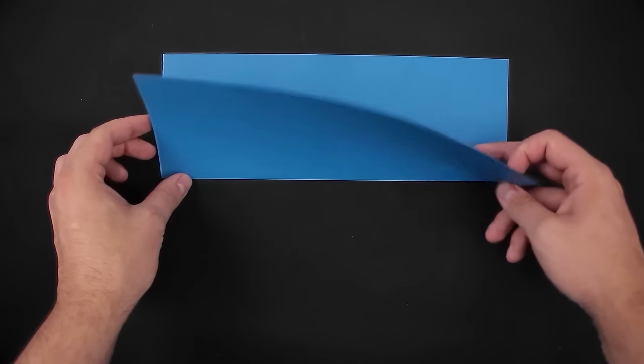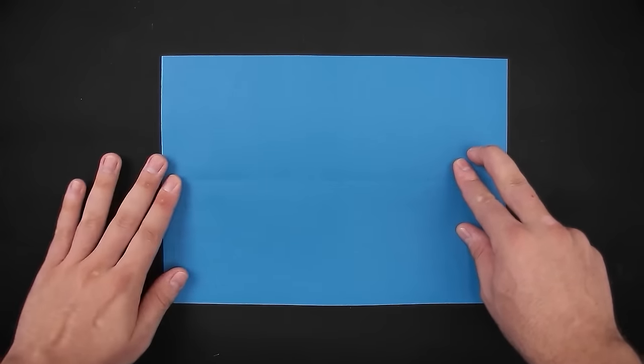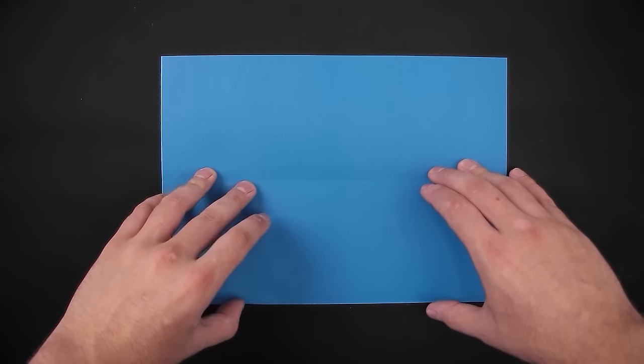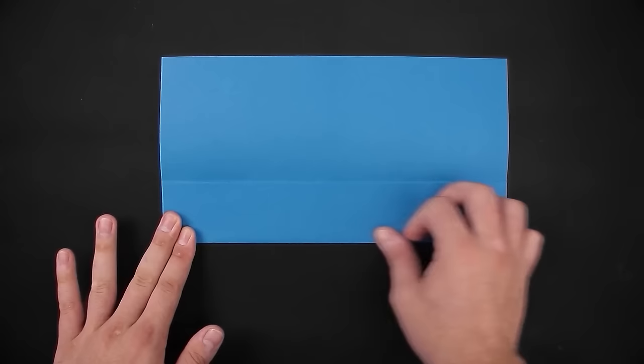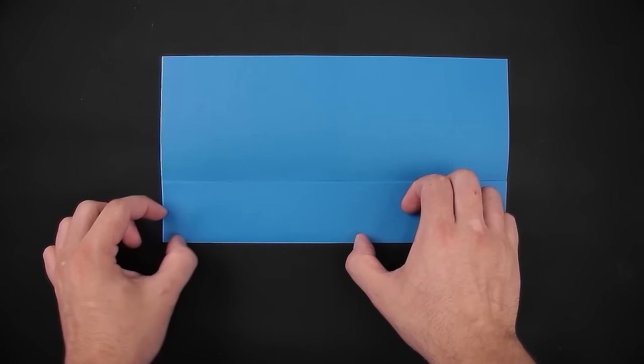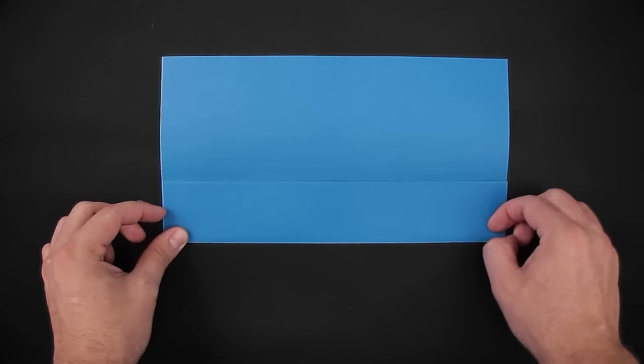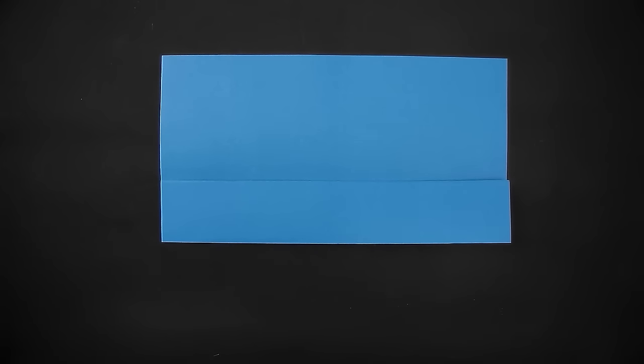After that we unfold, and now divide by four, bringing the edges to the middle. We'll start by folding the bottom side, and then the same with the top side.